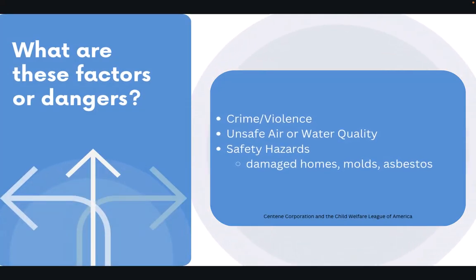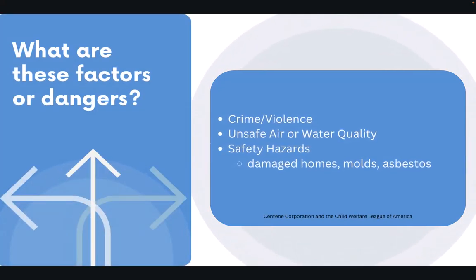According to the Centen Corporation and Child Welfare League of America, across our American society, many individuals and families live in neighborhoods surrounded by violence, unsafe air or water, and immense risk to general safety. Continued exposure to these environments puts a greater risk on the health of individuals.